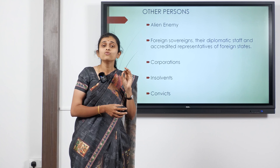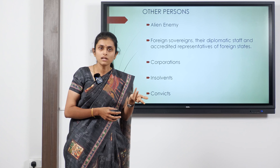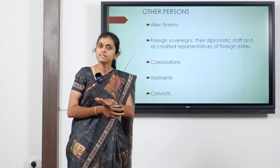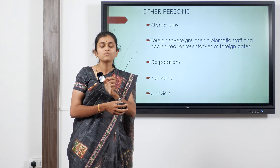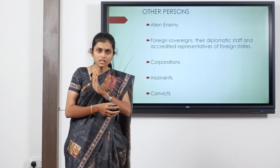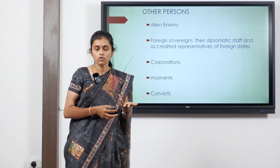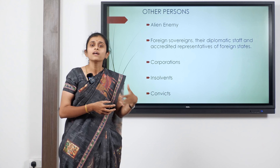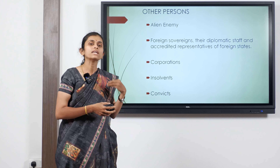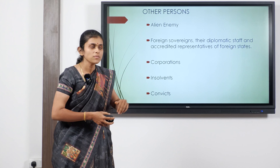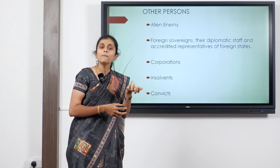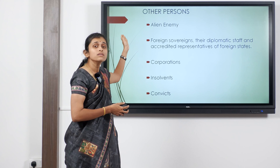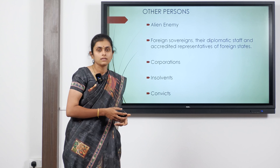Finally, convicts: any convict serving a sentence under the Indian Penal Code is not entitled to enter into a contract. Only after the sentence is completed, or during parole or bail, can they enter into a contract. These are all the other persons incompetent to enter into a valid contract. In recap, persons incompetent to contract are minors, persons with unsound mind, and other disqualified persons as per the court of law.